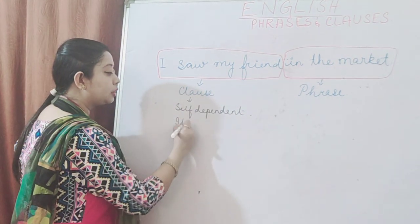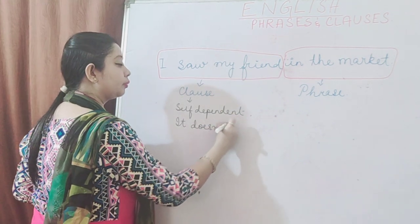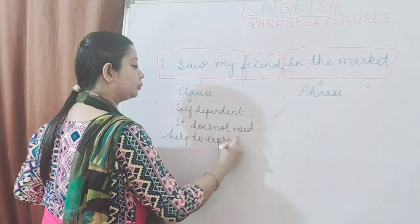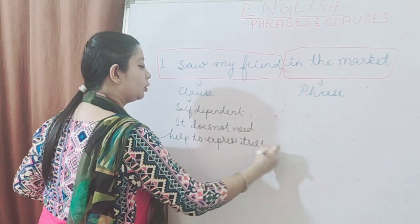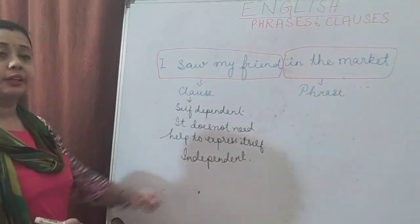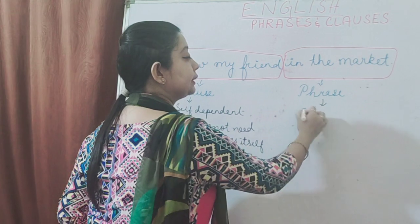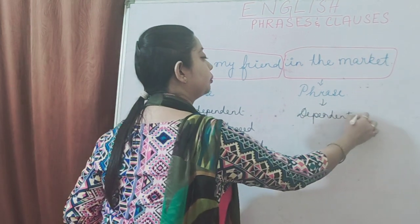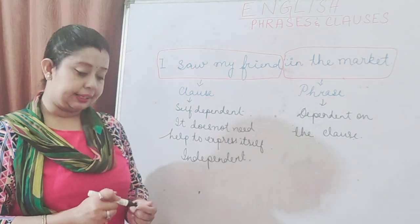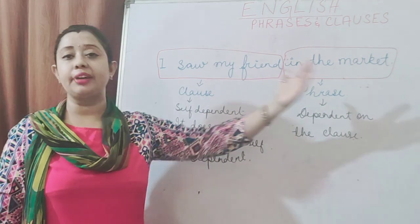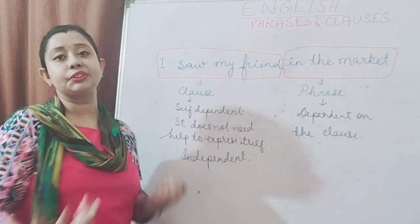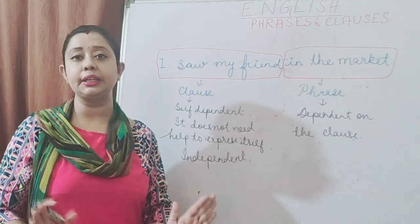The clause does not need help to express itself — you can say the clause is independent. But in the case of a phrase, we see that it is dependent on the clause to understand its meaning. Therefore, whenever we write a phrase, we cannot write it on its own — we always need a clause. But I can write a clause on its own, pick it up from the sentence, and it will still retain its meaning.